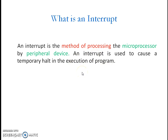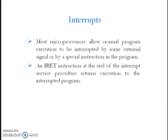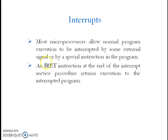An interrupt is used to cause a temporary halt in the execution of a program. Most microprocessors allow normal program execution to be interrupted by some means — either by means of external signals or internal signals. When that interrupt occurs, the microprocessor has to stop executing the current program and service the interrupt. After executing the interrupt service routine, it will come back to the interrupted program by placing an IRET instruction at the end of the interrupt service routine, which brings control back to the mainline program.